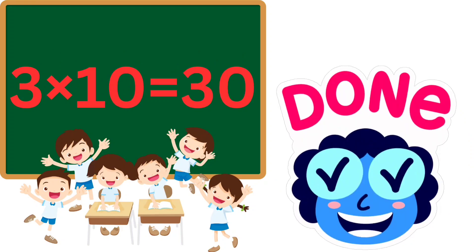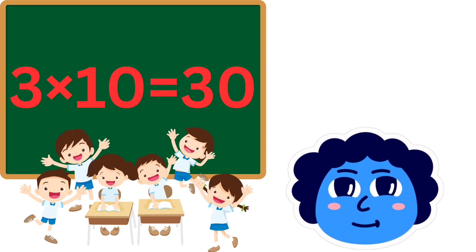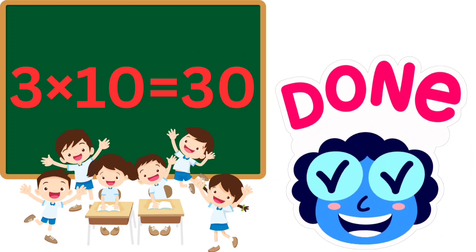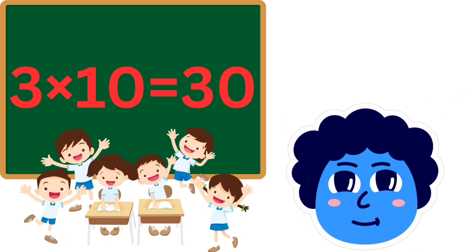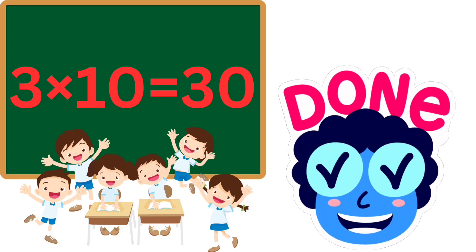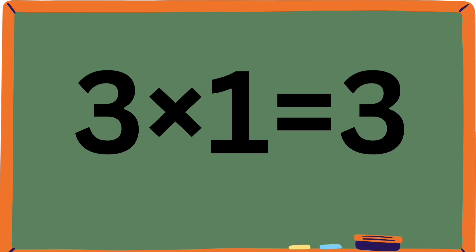3×9=27, math is fun. 3×10=30, now we are done. Great job everyone! Let's learn together.